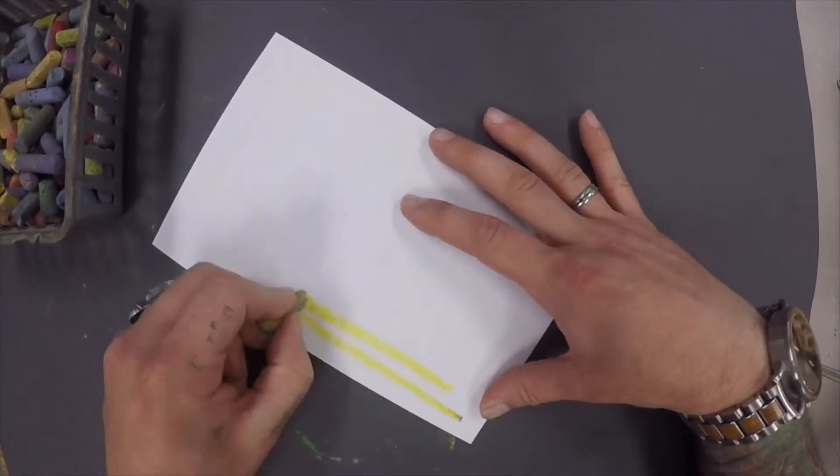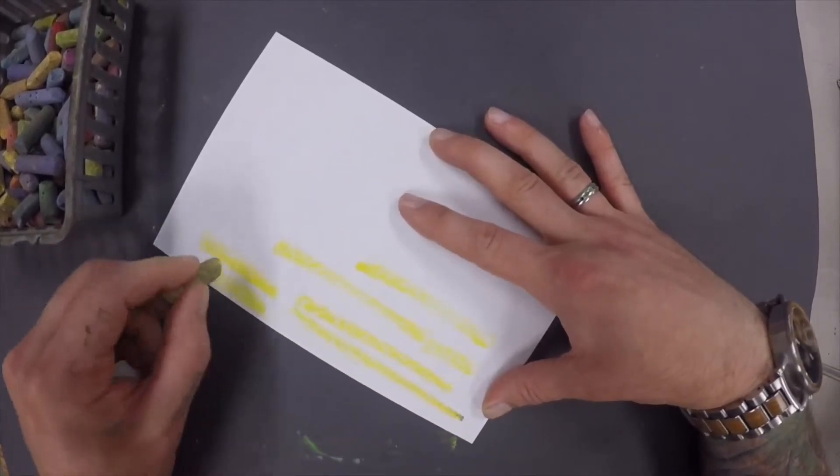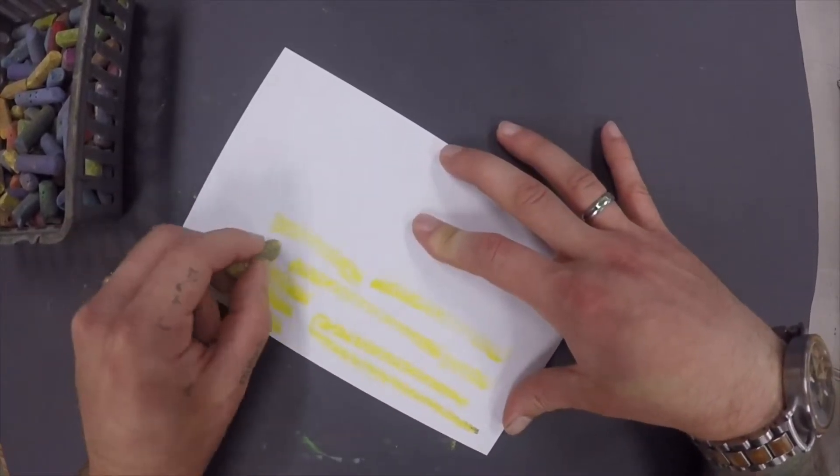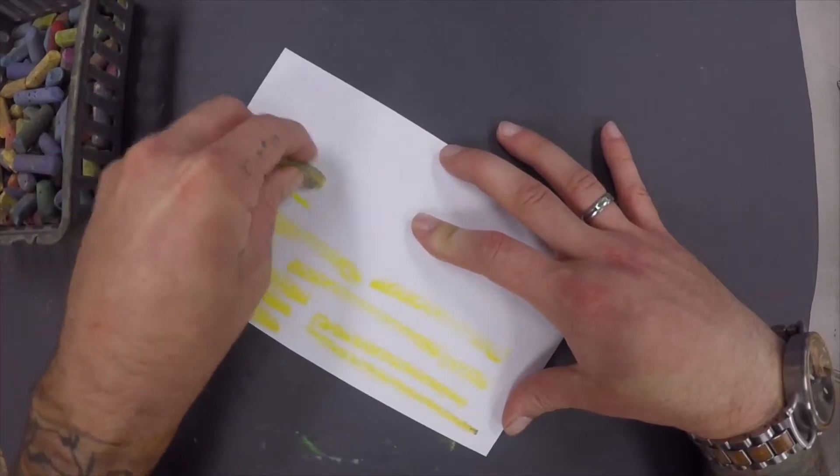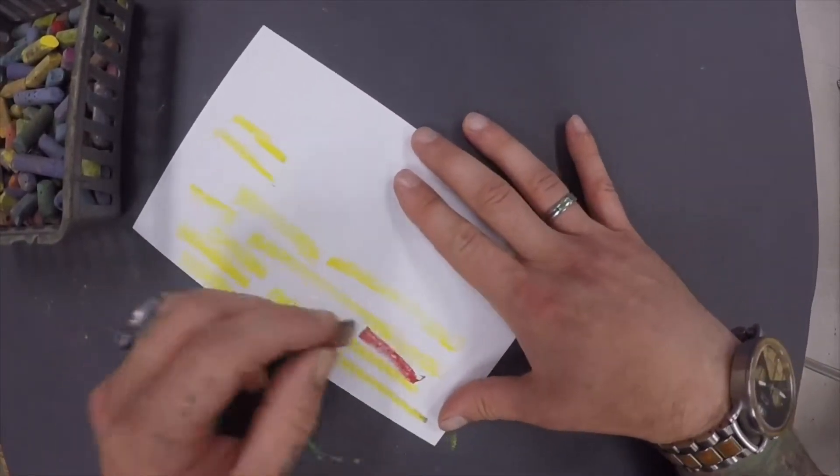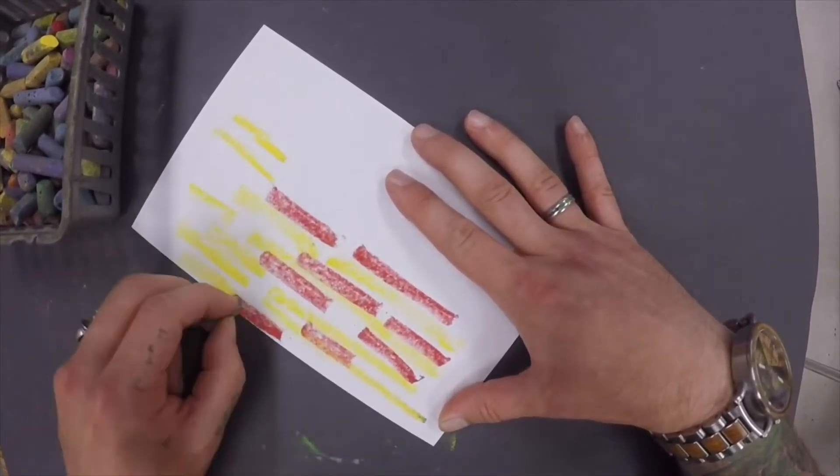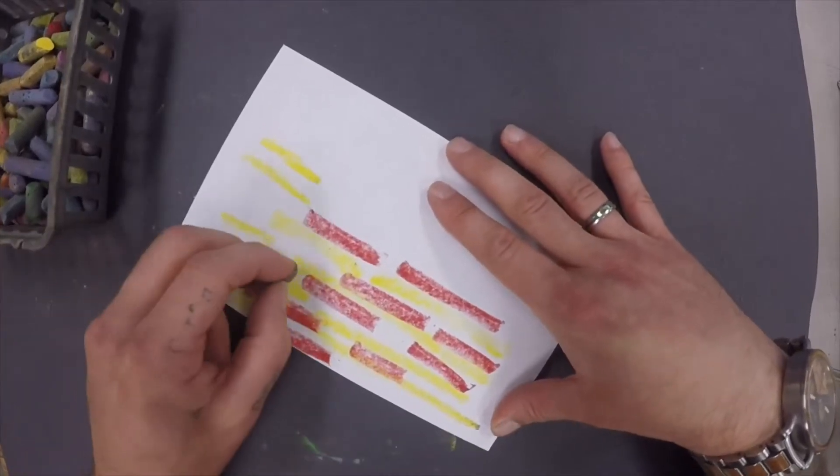So we want to work with just making marks. We want to keep our lighter, warmer colors, our reds, our yellows, our pinks, closer to the bottom. And we want to work in these short lines like this. Some short, some long. But just lines. We're not coloring. We're just making lines.